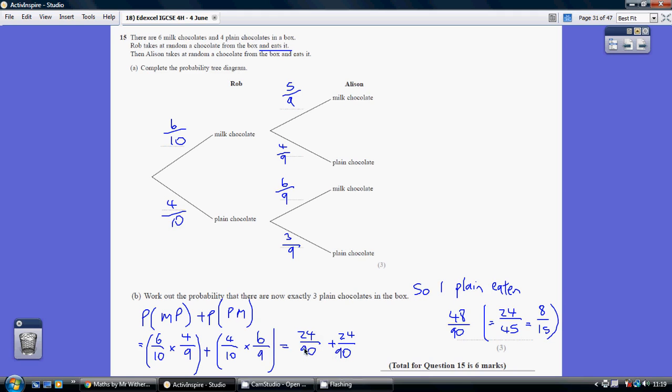Remember, once you've got a common denominator, that remains unchanged when you add them together. So that's 48 over 90. That would give you full marks, but you could have simplified it down to 24 over 45 or 8 over 15 if you wanted.